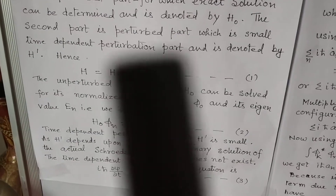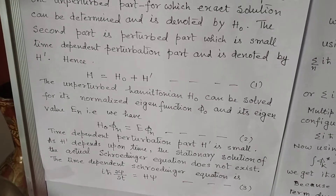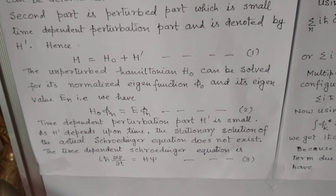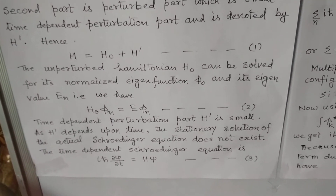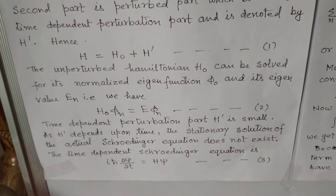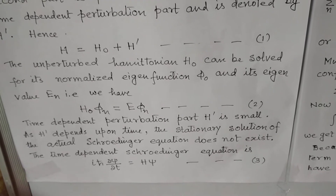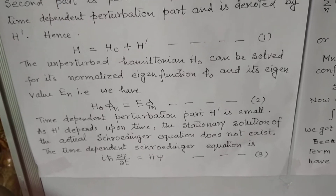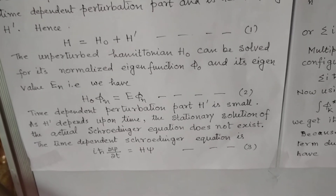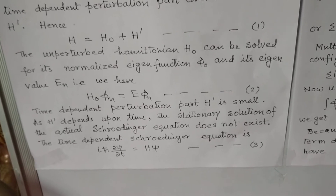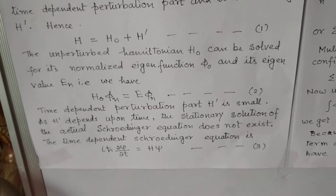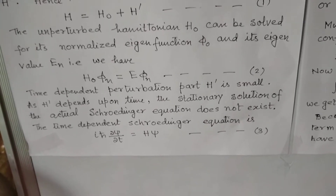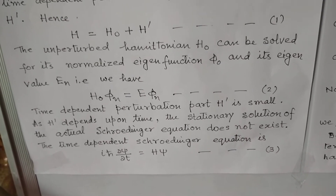Hence, total Hamiltonian H equals H₀ plus H', denoted by equation 1. The unperturbed part H₀ can be solved for the normalized eigenfunction φₙ and its eigenvalue Eₙ, that is H₀φₙ equals Eₙφₙ, which is equation 2. The time-dependent perturbation part H' is small.